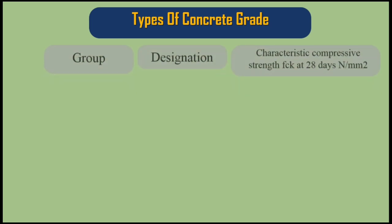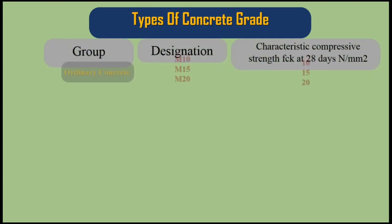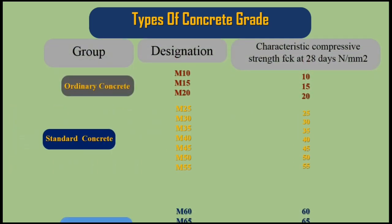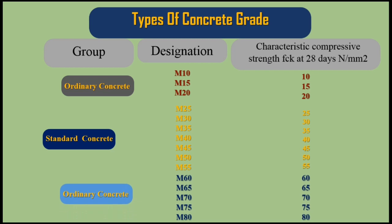Types of concrete grade: Concrete is graded or designated based on its compressive strength. As per the IS code, it is graded into 15 types as given in the table below.